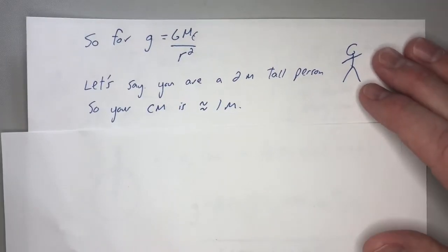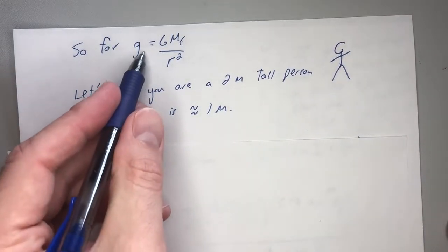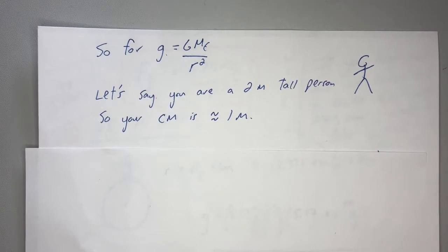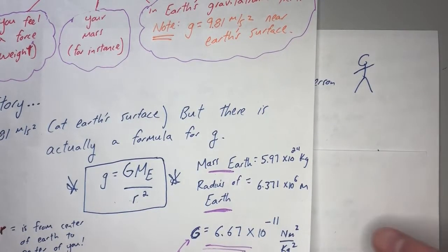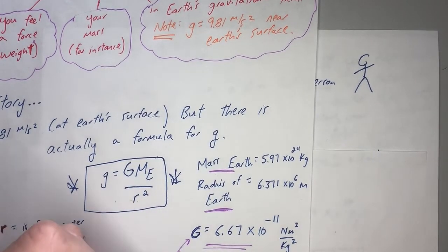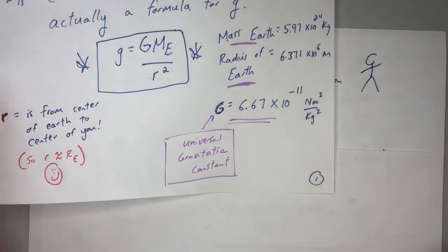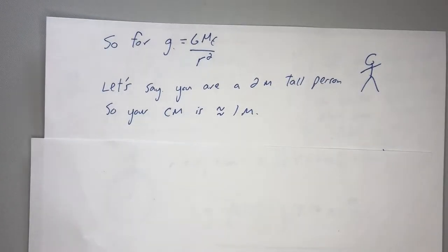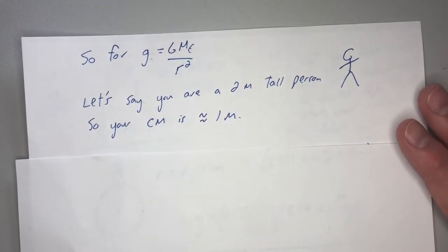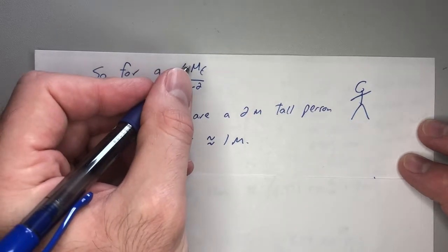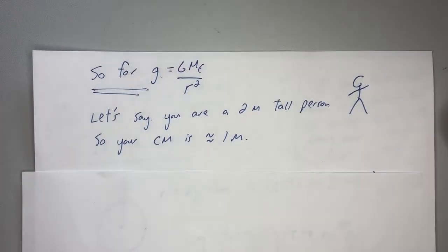So for gravity of Earth — and this really applies to any body, like Jupiter or whatever — you can figure out the gravity of any object. On the AP test, they won't make you memorize the mass of the Earth, the radius of the Earth, or the universal gravitation constant of 6.67 times 10 to the negative 11th — that's on your table of information. AP physics is not about memorization; it's about having your tools and knowing how to use them. Note: little g is the acceleration due to gravity; big G is the universal gravitation constant, 6.67 times 10 to the negative 11 newton meters squared per kilogram squared — just a number.